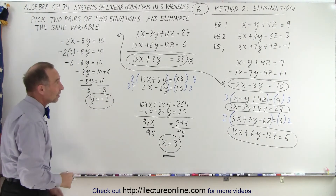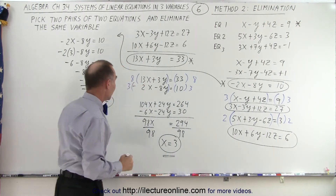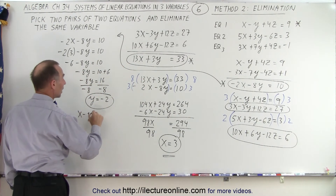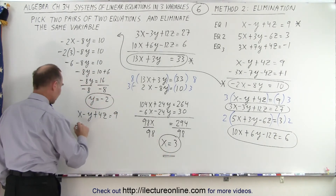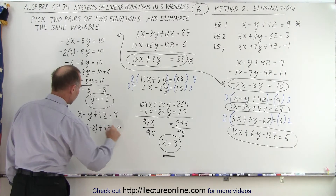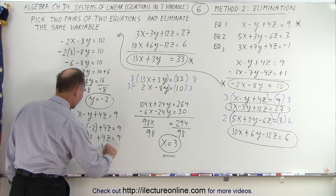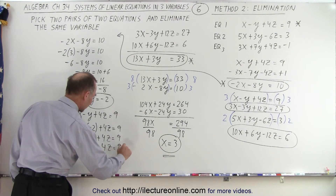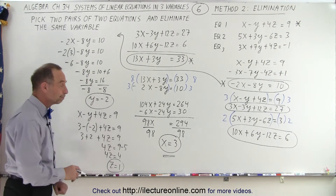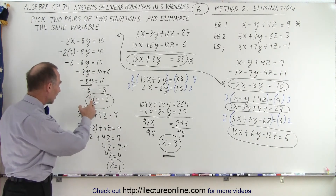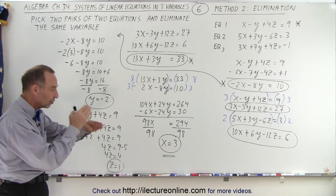And there's the second variable. Now we grab one of our original equations and plug in the values for x and y to calculate z. Taking x minus y plus 4z equals 9, with x equal to 3 and y equal to negative 2: 3 minus negative 2 plus 4z equals 9, so 3 plus 2 plus 4z equals 9, giving 4z equals 4, and z equals 1. So x equals 3, y equals negative 2, z equals 1 is the solution — the point where the three planes in three-dimensional space all come together.